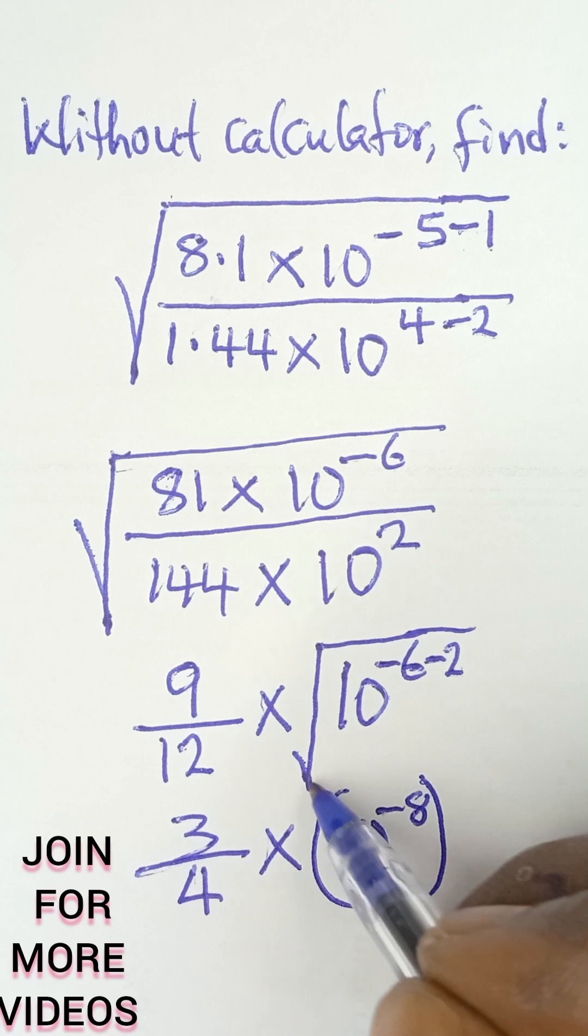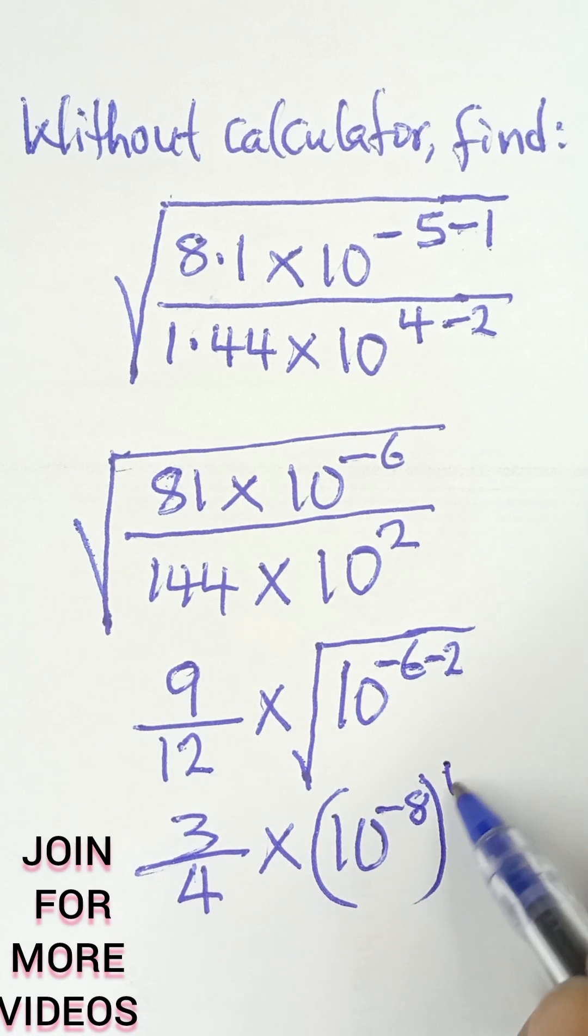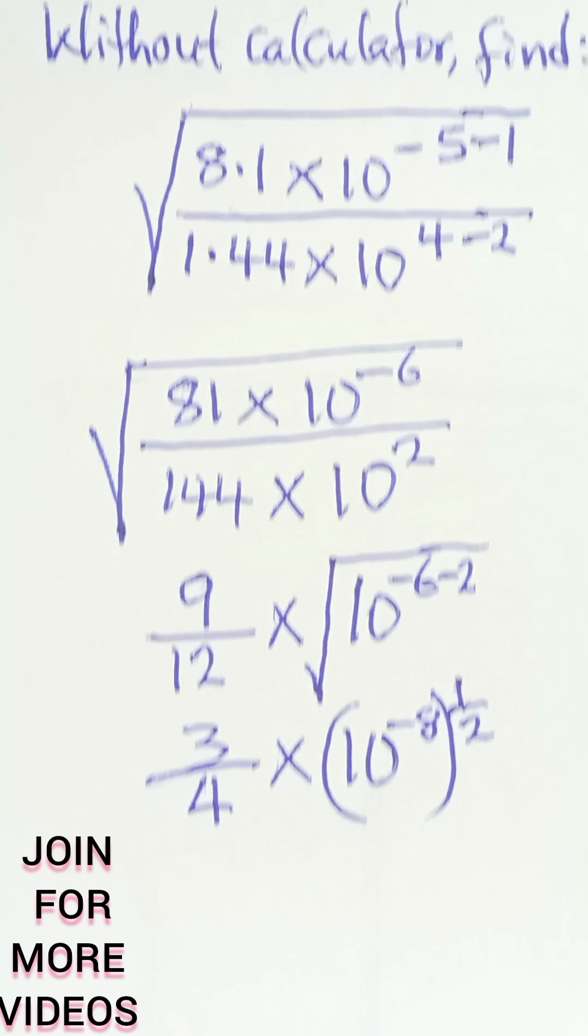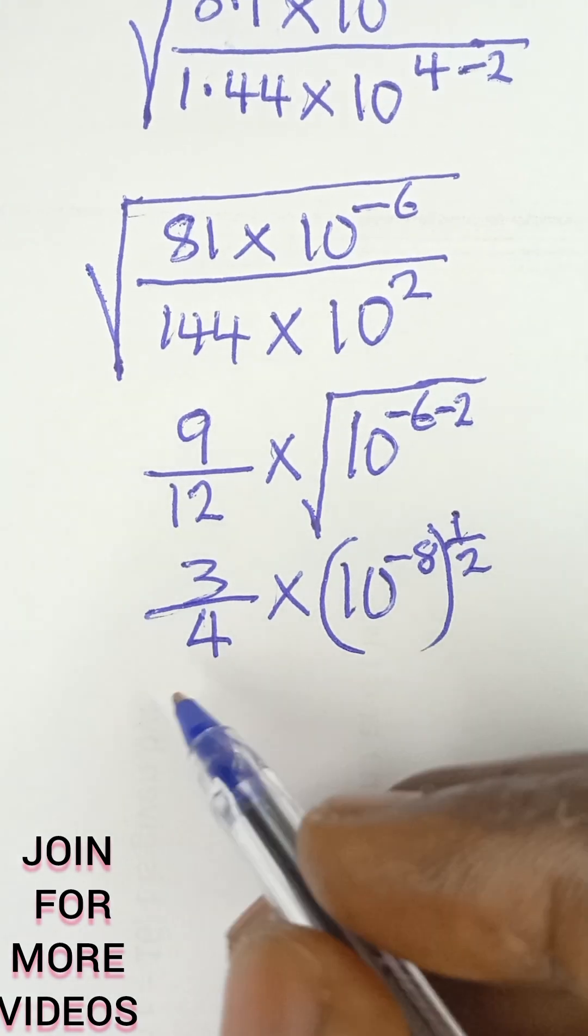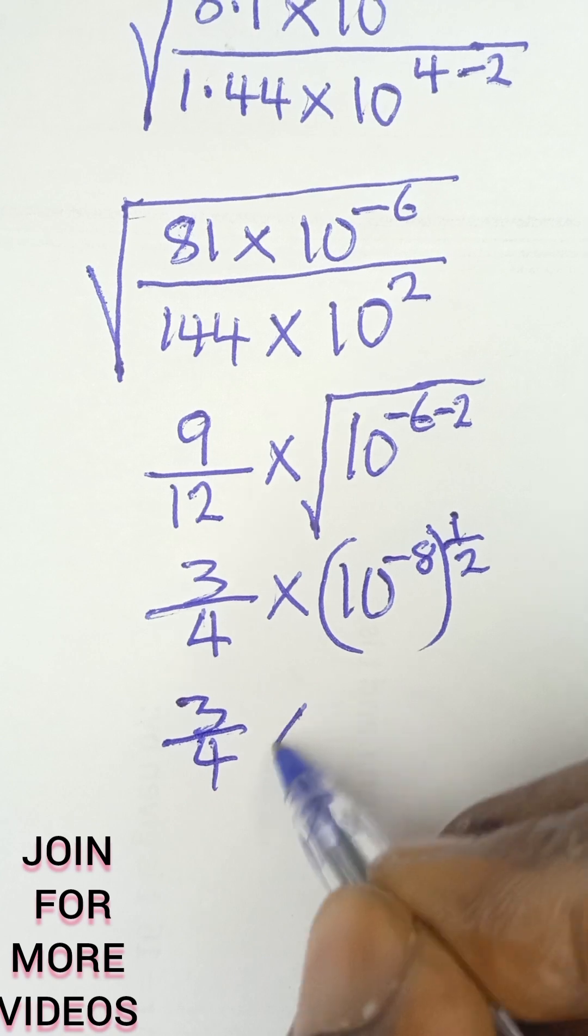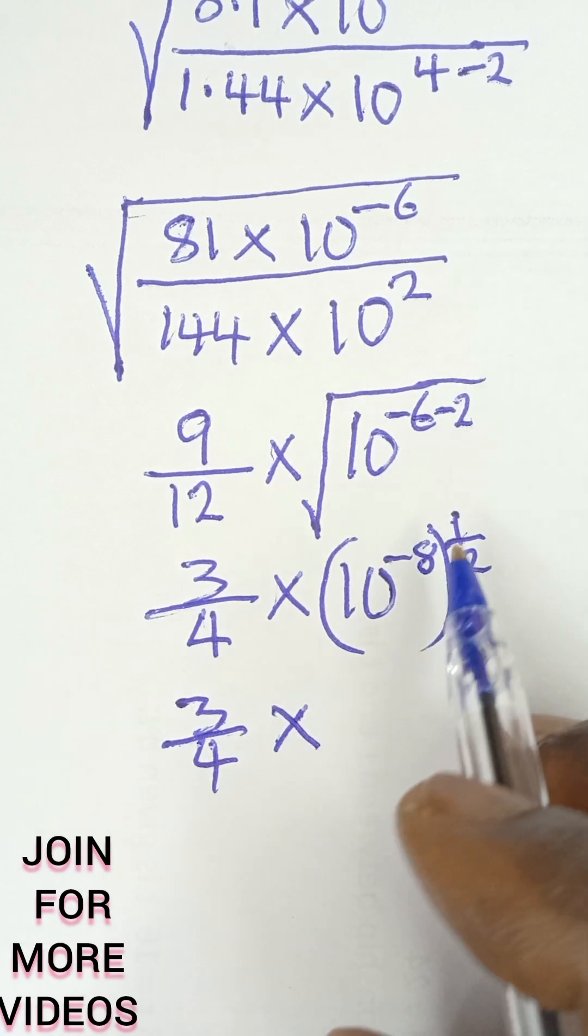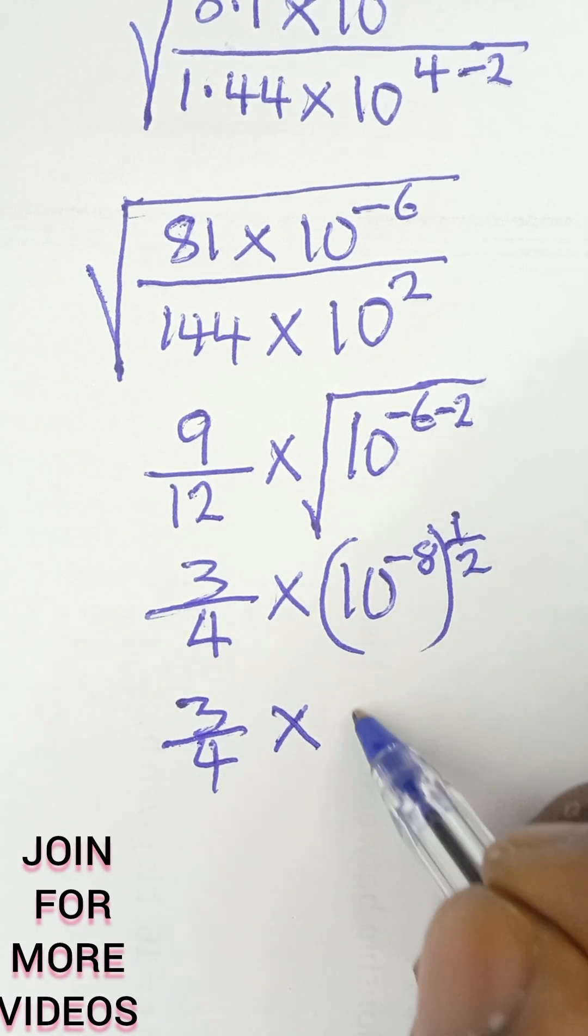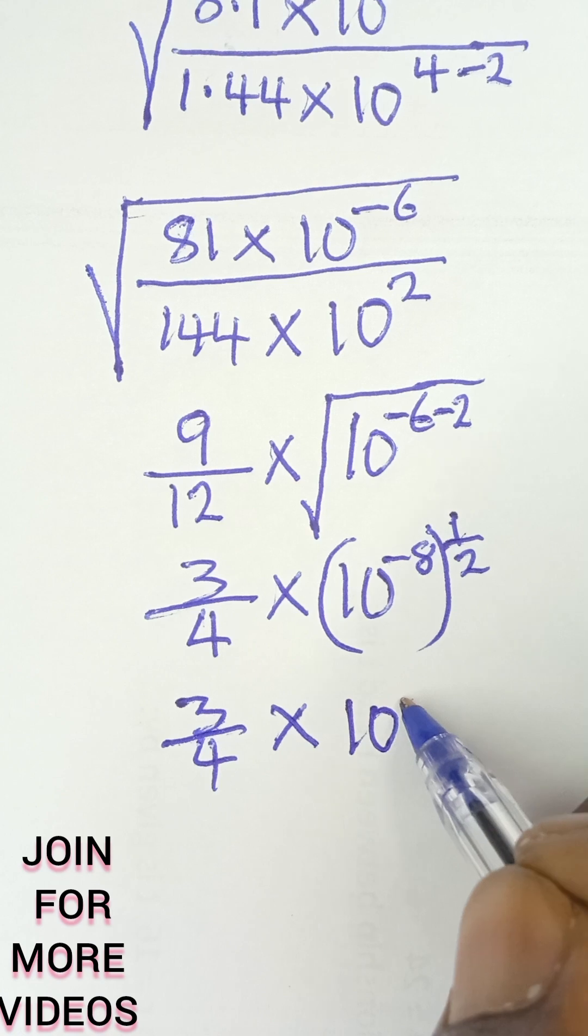All multiplied by... because the square root sign means raised to the power half. So this will simplify further to give me 3 over 4 multiplied by... this is now what? 10 raised to the power negative 4, when this multiplied becomes negative 4.